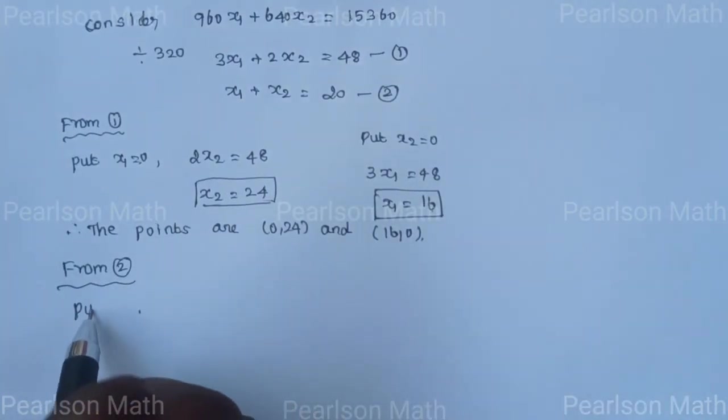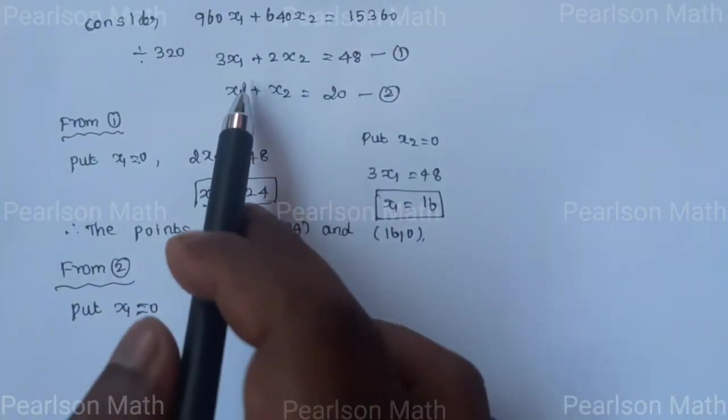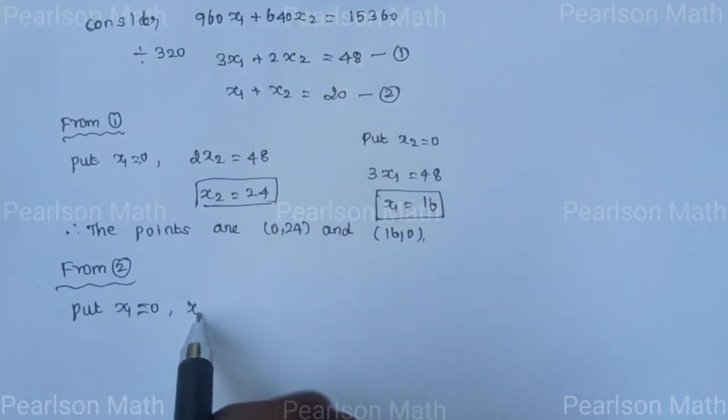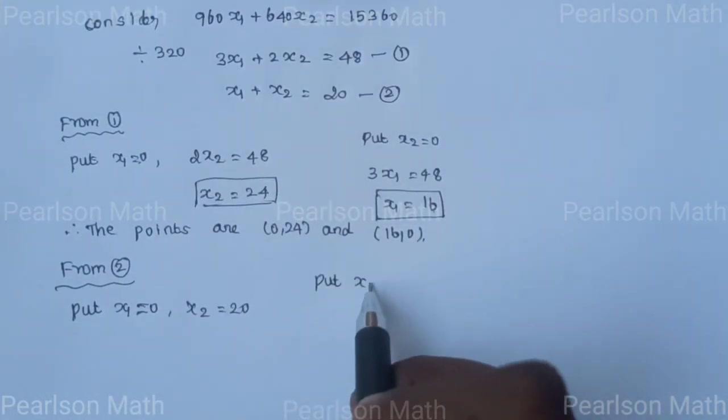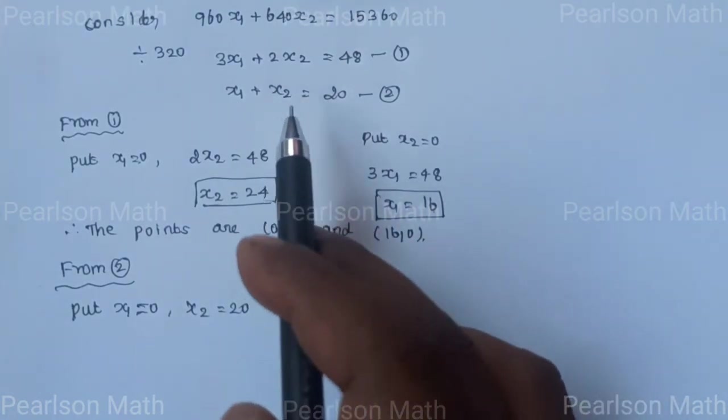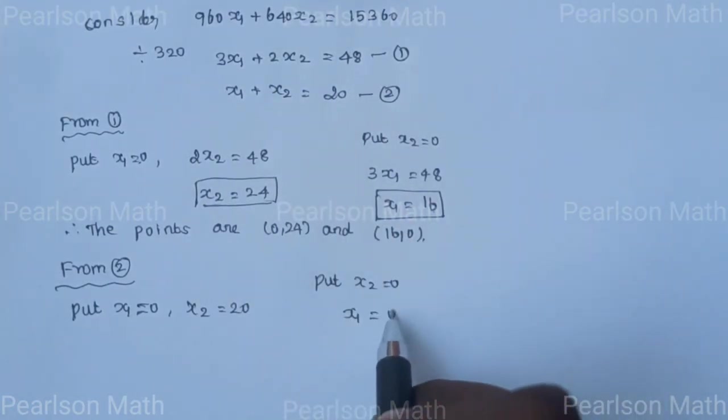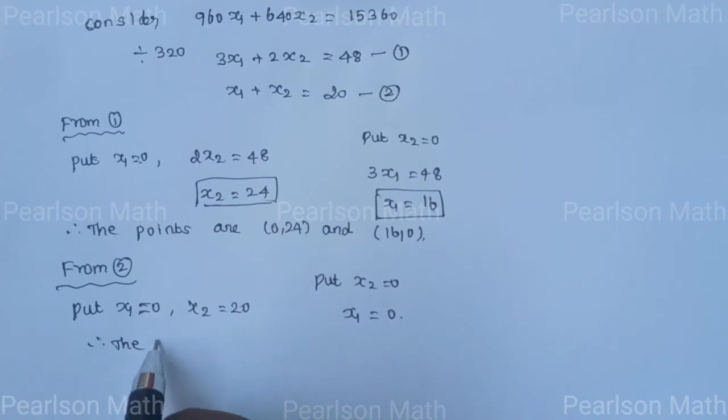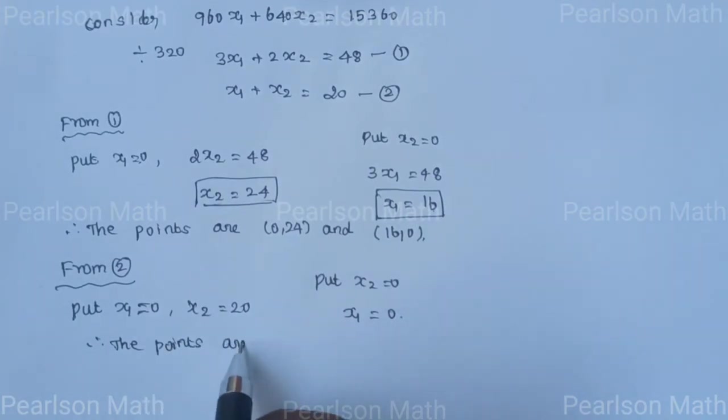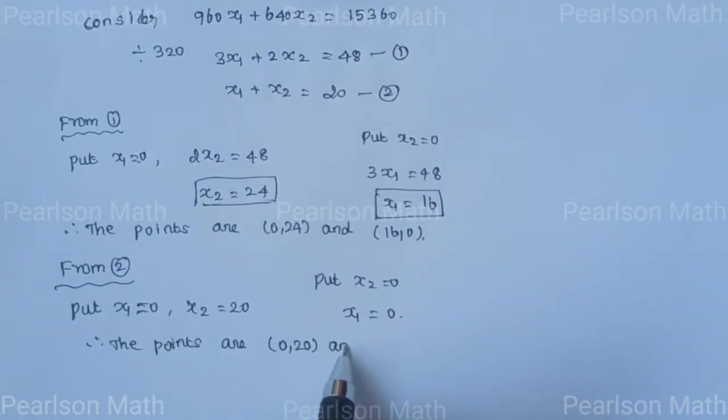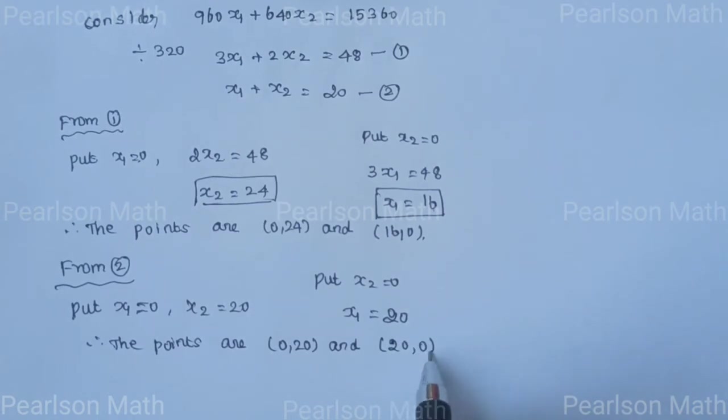Same procedure for the second equation: x₁ plus x₂ equals 20. Put x₁ equals 0, then x₂ equals 20. Put x₂ equals 0, then x₁ equals 20. Therefore, the points are (0, 20) and (20, 0).